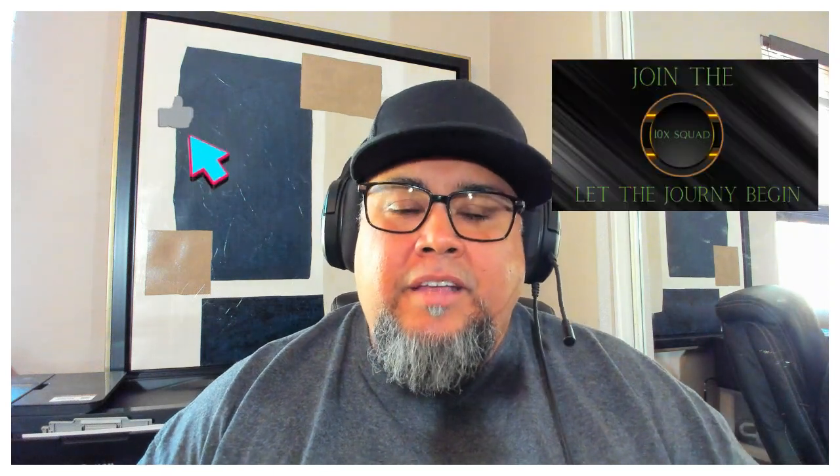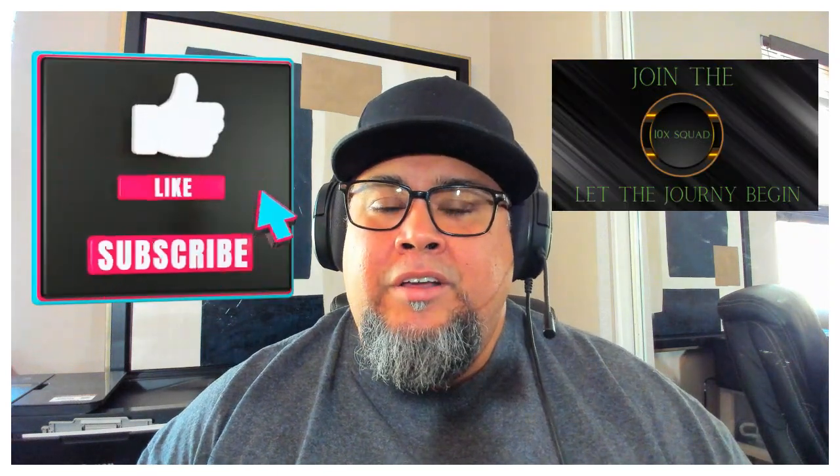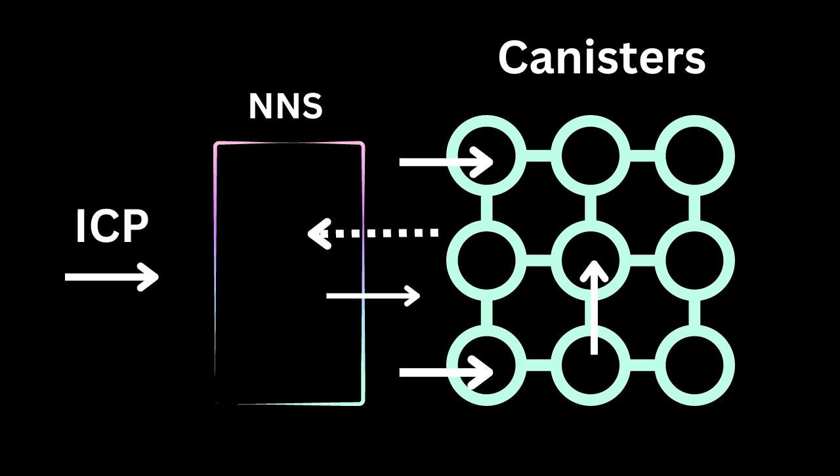Let's take a look at how Internet Computer's blockchain is set up, which will give us an idea of how to incorporate everything we just talked about. So Internet Computer has put in place what's called the NNS — the Network Nervous System. This basically governs the way the blockchain works.